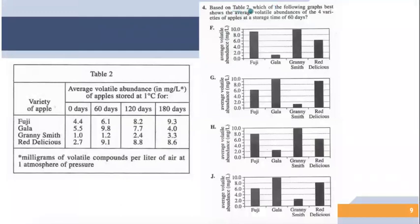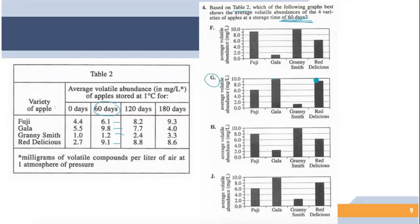Question four is another table two question. It asks which graph best shows the average volatile abundances of the four varieties at a storage time of 60 days. I'm paying attention to the 60-day column, and my numbers are 6, 9, 1, and 9. Number four should be G — the graph shows approximately six, nine, one, and nine.